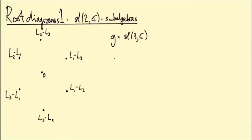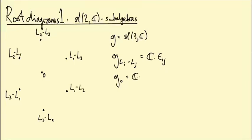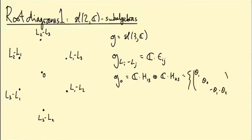The corresponding weight space, which I'll call g_{Li minus Lj}, was one dimensional, spanned by the matrix E_{ij}, which has a one in position ij and zeros elsewhere. At zero, the zero weight space was spanned by the matrices H13 and H23 — in other words, the diagonal matrices with entries θ1, θ2, minus θ1 minus θ2.